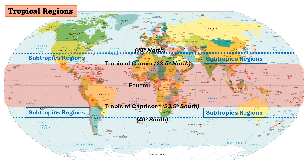What is the subtropical region? The subtropical region is the area of the Earth located between the tropics and the temperate zones, approximately between latitudes 23.5 degrees and 40 degrees in both the northern and southern hemispheres.